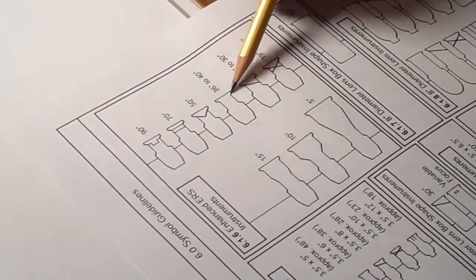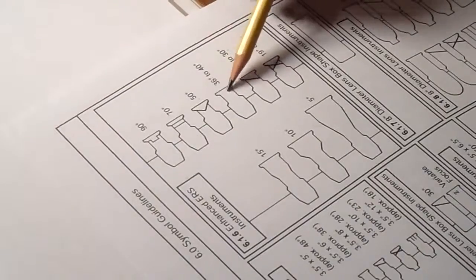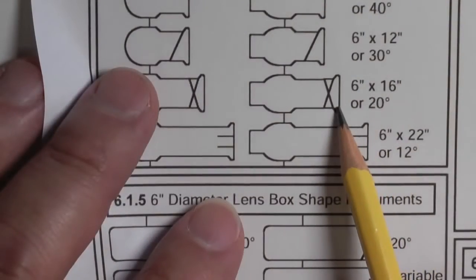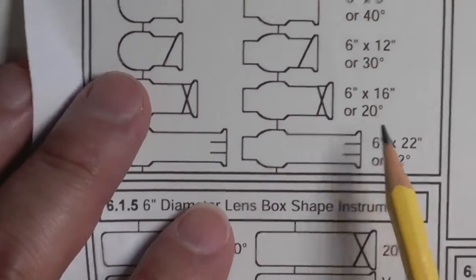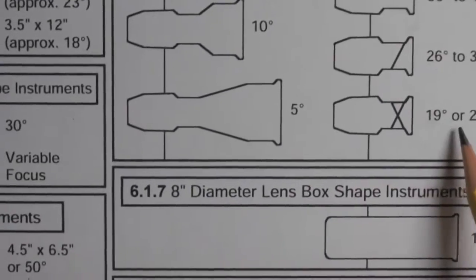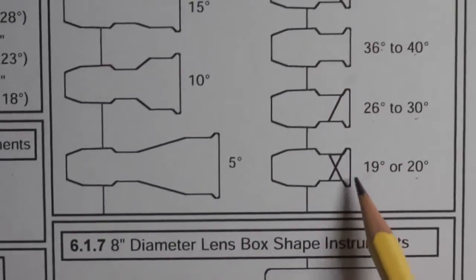This 36 to 40 degree unit is clear on the inside. It doesn't have these lines. The 6 by 16 has an X, which is about 20 degrees, and here the 19 or 20 degree unit has an X in there.